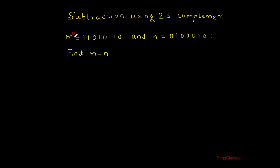Here the example given is: m is represented in binary format which is 1 1 0 1 0 1 1 0, and we have got n which is 0 1 0 0 0 1 0 1. So these are the two numbers; the task is to find the subtraction m minus n using two's complement.